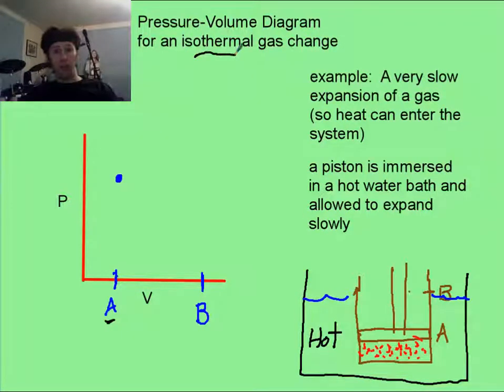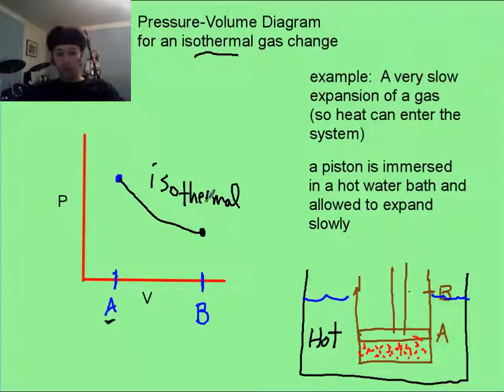And that's why we call it an isotherm. Now the pressure will still drop, and you will end up with a curve like this. And we're going to call this our isothermal curve, where it goes to the larger volume, the pressure does drop, but it goes along this curve like so. Now we'll compare this to the next one.